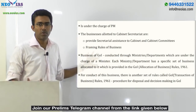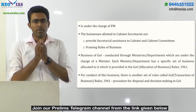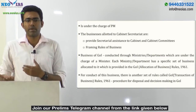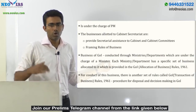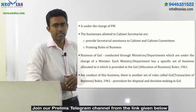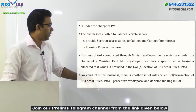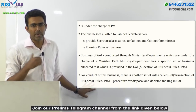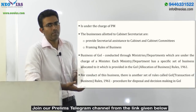Along with that, it also frames the rules of business. There are two types of rules of business. The business of the government is carried out through various ministries headed by several ministers. Each ministry has a set of specific businesses allocated through the Government of India Allocation of Business Rules 1961. The manner in which these businesses are conducted is governed by the Government of India Transaction of Business Rules 1961.